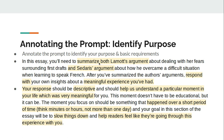So for this one, you need to summarize two arguments. The first is that you need to summarize Lamont's argument about dealing with her fears about writing first drafts. And then you also need to summarize Sedaris's argument about how he overcame a difficult situation when he was learning to speak French. So by annotating so far, I can see that I need a summary about the Lamont piece, which is Shitty First Drafts, and a summary about the Sedaris piece, which is Me Talk Pretty One Day.